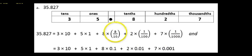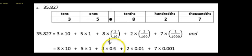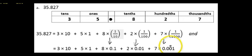Now I can look at these fraction forms and change them into decimal form. My whole numbers stay the same. I can rewrite eight times one-tenth in decimal form. Two times one one-hundredth can be written in decimal form. And seven times one one-thousandth looks like this in decimal form. So basically, the fraction form is just another representation of the decimal — we can see how the two numbers are connected.